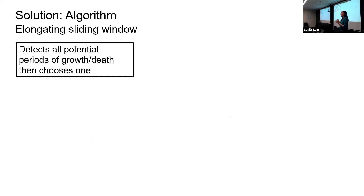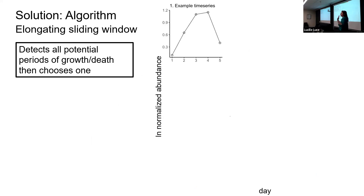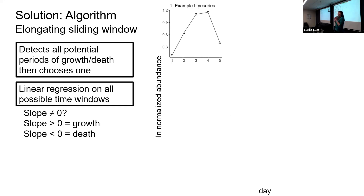This algorithm detects all potential periods of growth and death and then chooses the best one. We have normalized abundance on the y-axis and day on the x-axis. What we do is take a linear regression and fit it to every single possible time window in this data, and ask: is the slope of that regression significantly different from zero? If it's greater than zero, that indicates growth; if it's less than zero, that indicates death.